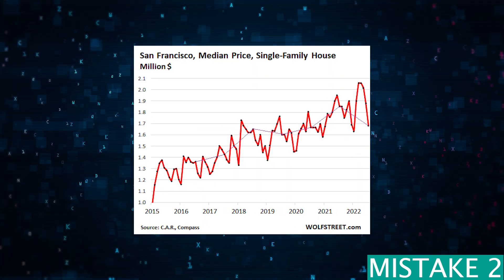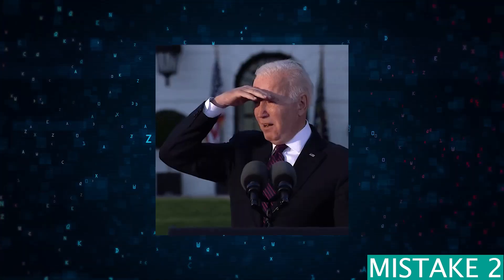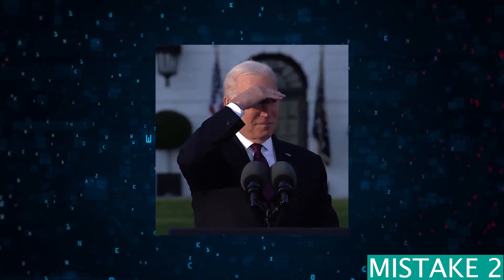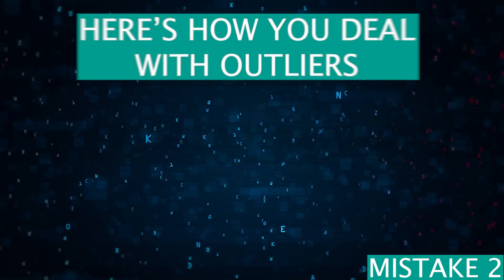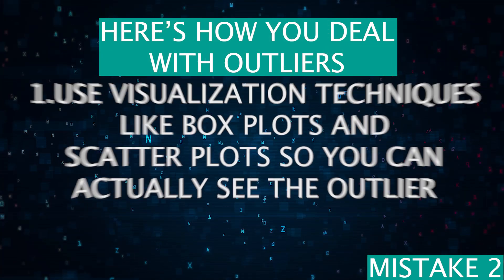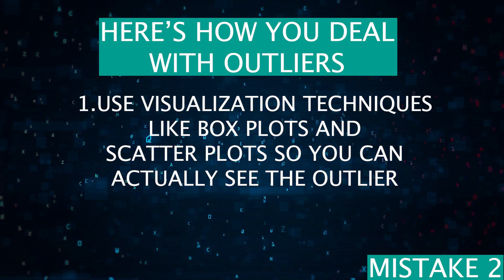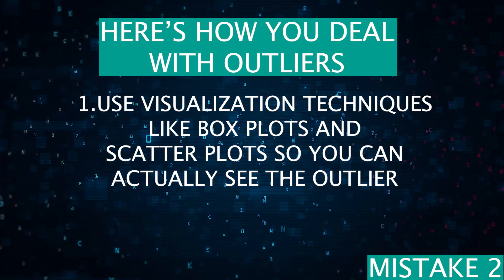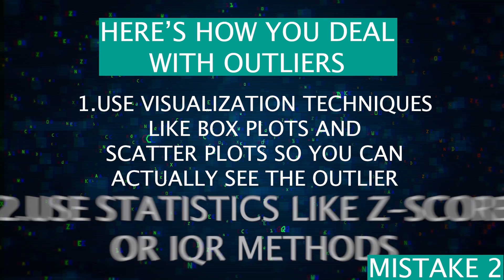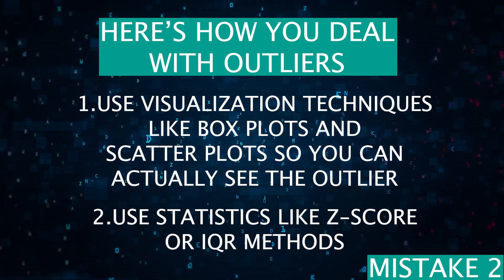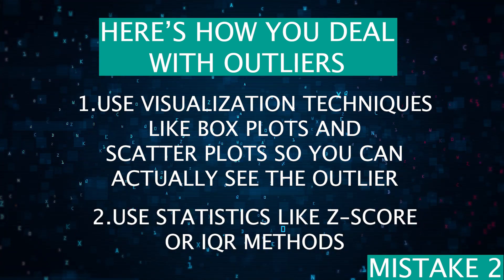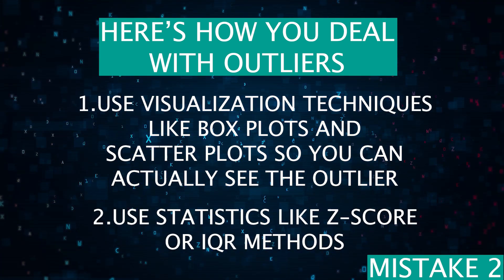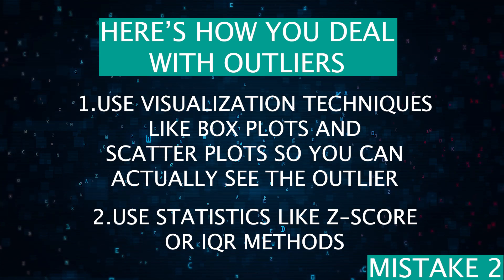So how do you find outliers and deal with them? There are two ways. The first is visual — you can create box plots and scatter plots so you can actually see the outlier. The second is statistical, using a z-score or an IQR method to statistically identify these outliers.